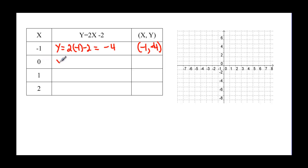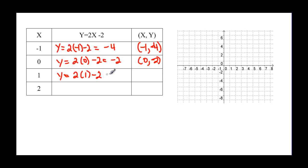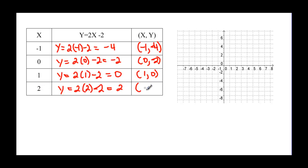For x = 1: y = 2(1) - 2 = 2 - 2 = 0, giving the point (1, 0). For x = 2: y = 2(2) - 2 = 4 - 2 = 2, so x is two and y is two, giving the point (2, 2).